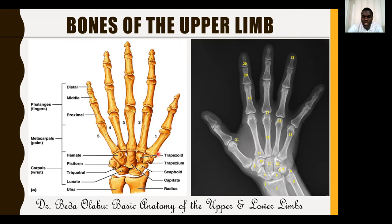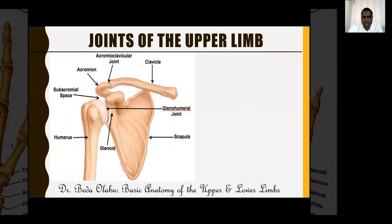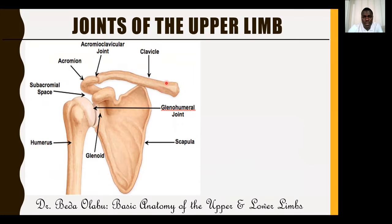It's important to know which carpal bone is lateral, which is medial, which is distal, and which is proximal. Those are the bones of the upper limb. Now we can talk about the joints of the upper limb.